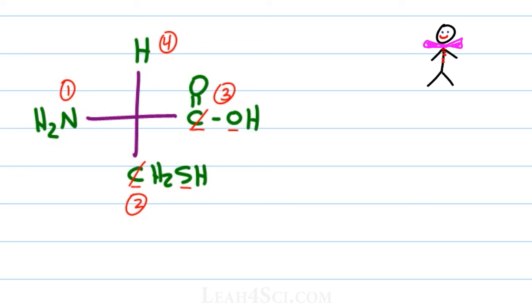We've set our priority, we verify that number four is in the back because it's in the up or down position on a Fischer projection. Cancel it out, trace an arc from one to two to three and we have an S configuration.